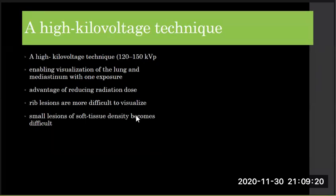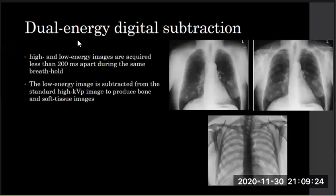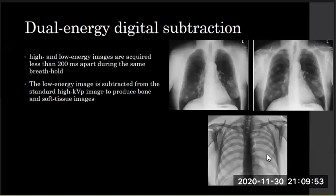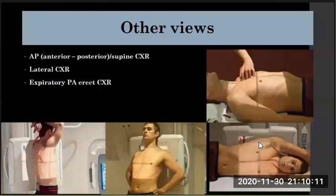The double energy digital subtraction technique uses both high and low energy at the same time, producing three films in one exposure: one without subtraction, one with subtraction of bone, and one for bone only. This is very good for determining soft tissue tumors and also for rib examination to see rib and bone pathology of the patient.